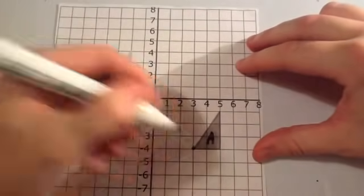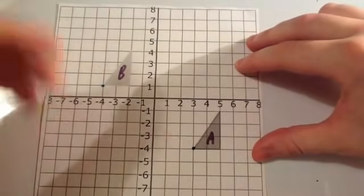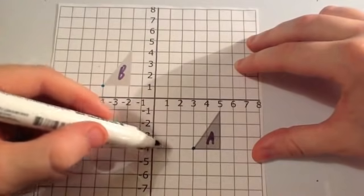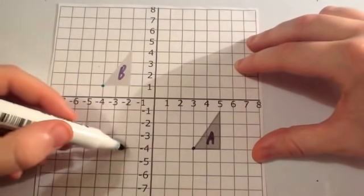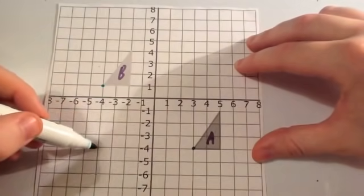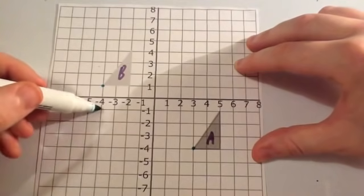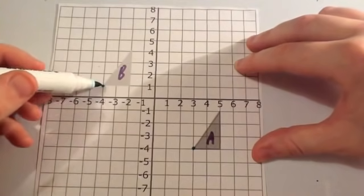So again, start from one corner, and see how we get to that equivalent corner in the image. So it's been moved 1, 2, 3, 4, 5, 6, 7 squares to the left, and 1, 2, 3, 4, 5 squares up.